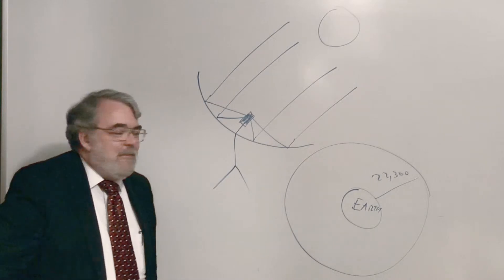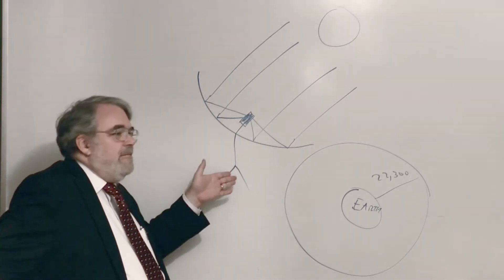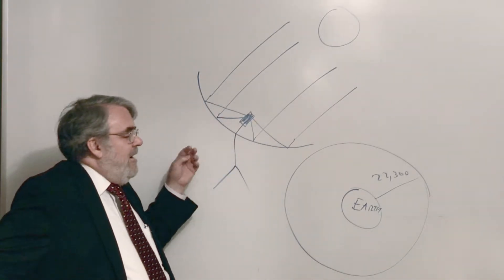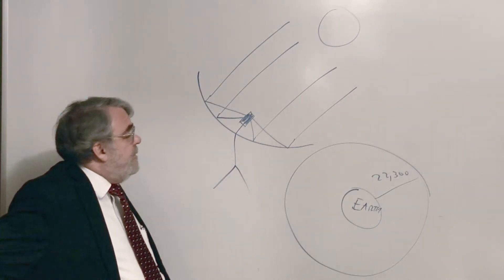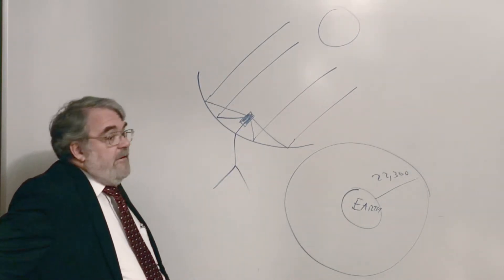So the reflective property of the parabola is that all the information, as far as radio signals, it could be light, it could be sound, all reflect off the dish into the focus, and that's why there's that signal collector there. It's collecting all that energy, and then it gets amplified and sent off to your TV or whatever. So very, very effective.